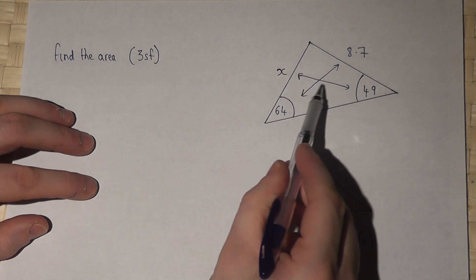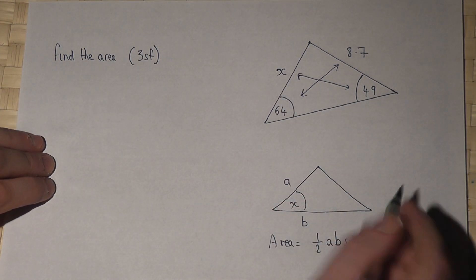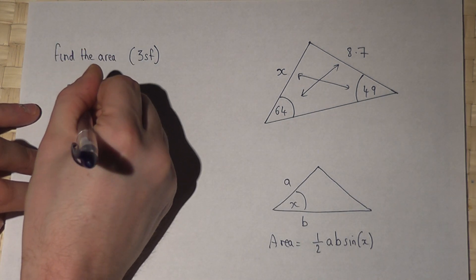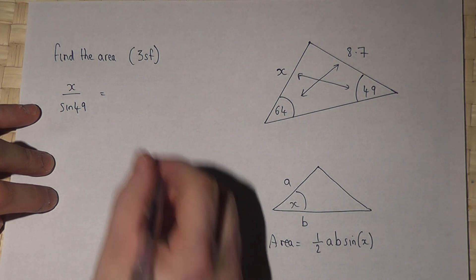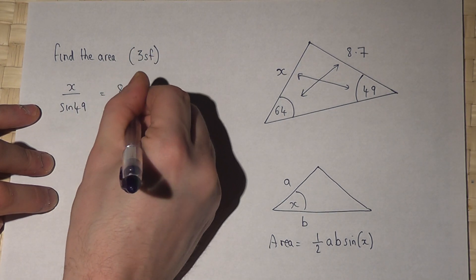Now the sine rule says that X over sine of 49 is equal to 8.7 over sine of 64.